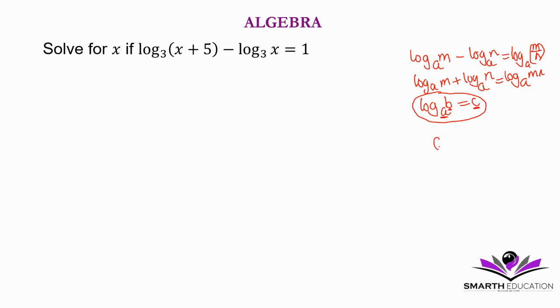So this is the base. So a^c = b. Just remember that this is the base, this is the exponent, and b is your argument or the number. Let's solve our equation.